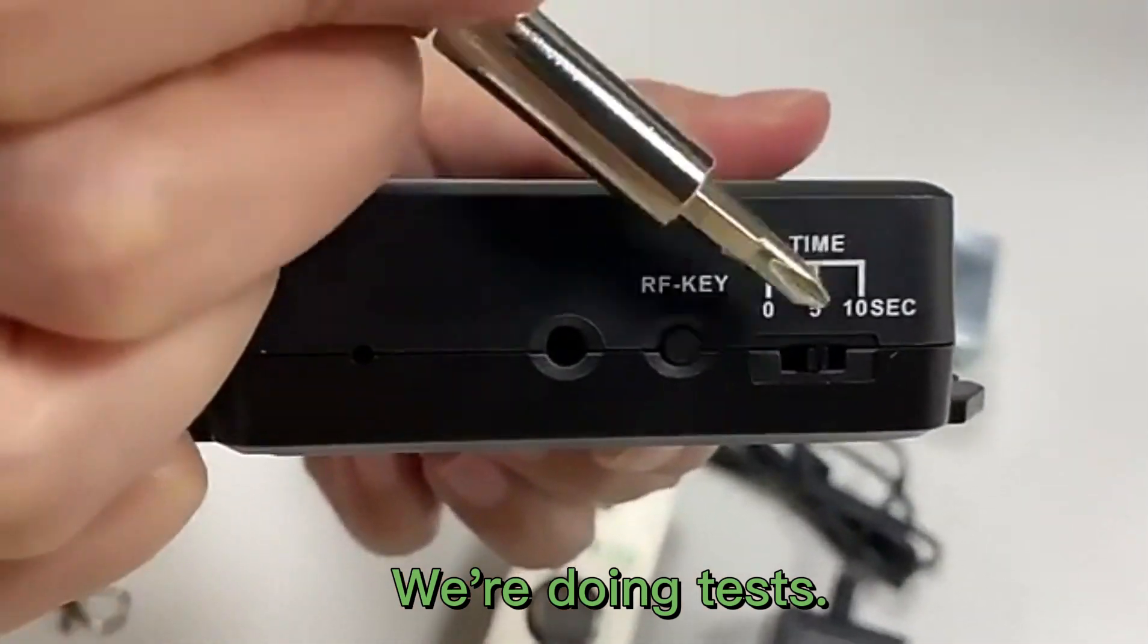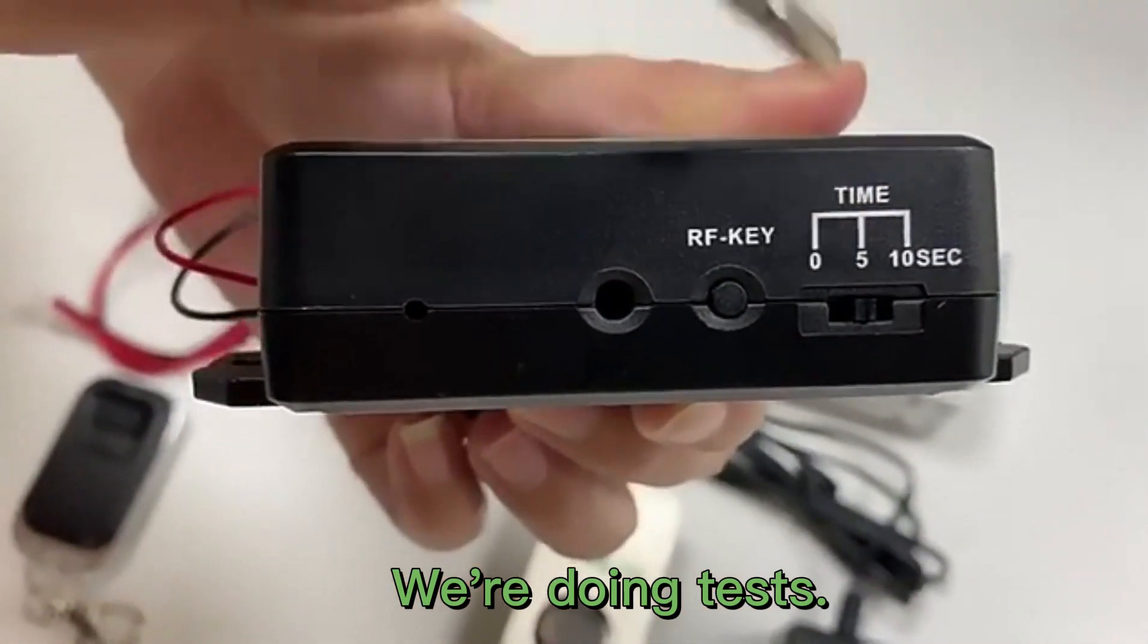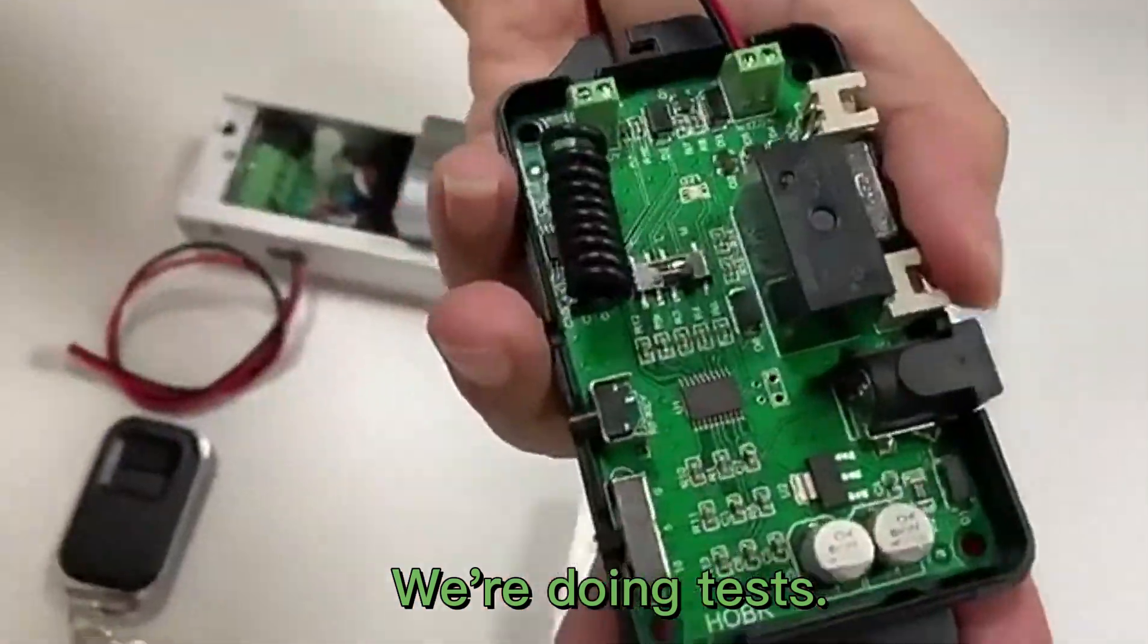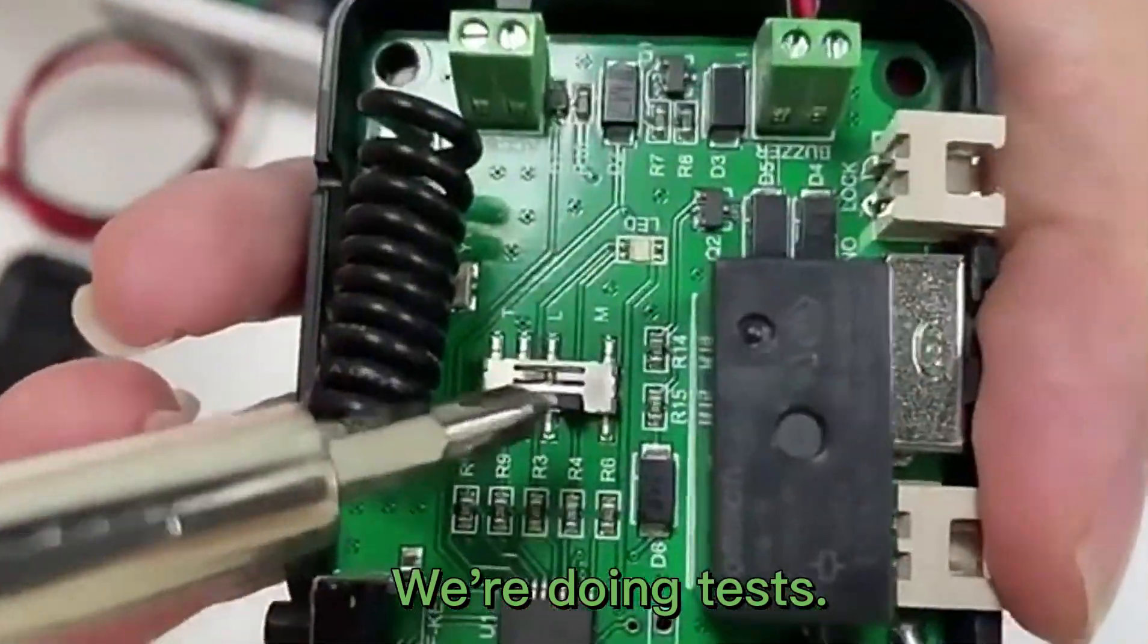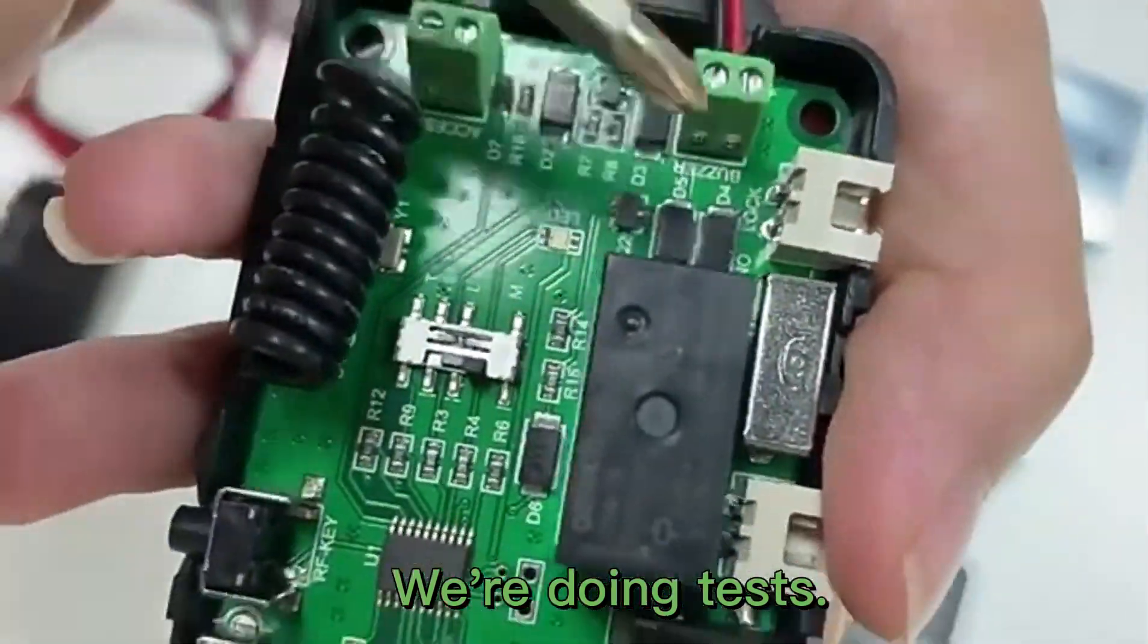This is the RF key, and this part is used to set the unlocking delay time. The default unlocking delay time is 5 seconds, and you can change the settings according to your needs. This part is used to set the work mode. The default work mode is momentary. This terminal is used to connect the external button.